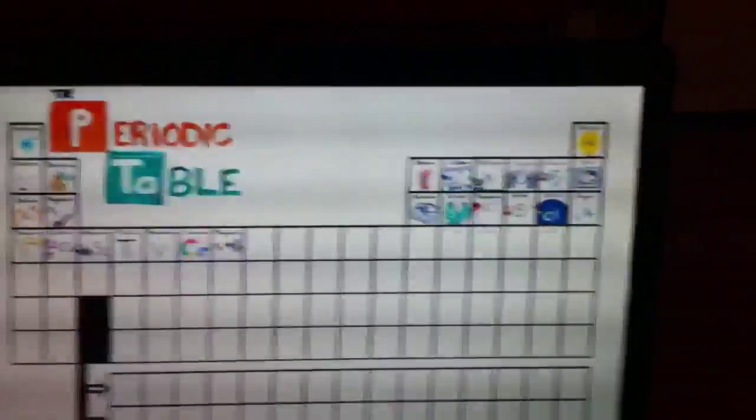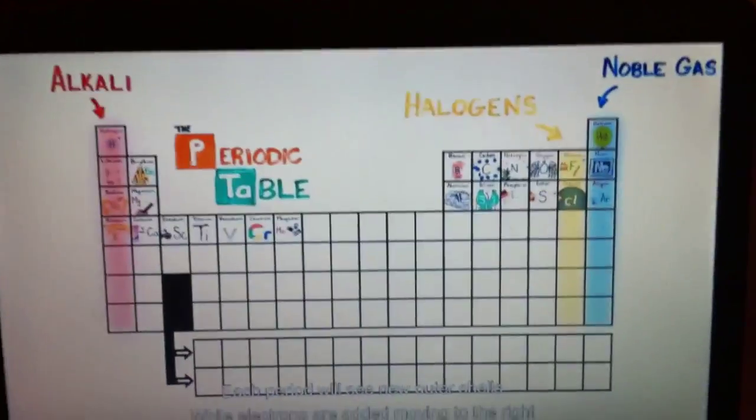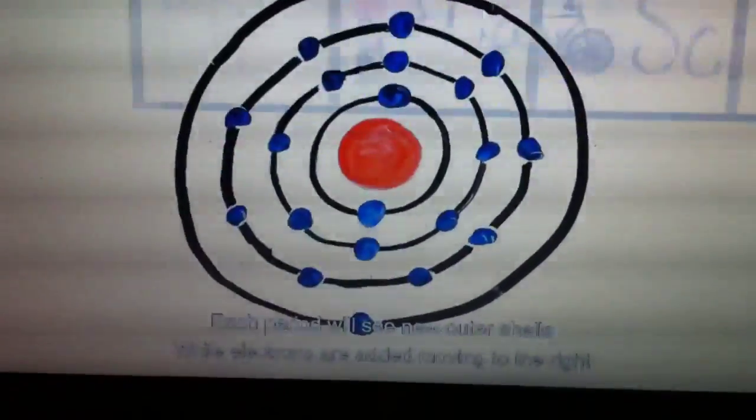This is the periodic table, noble gas is stable, halogens and alkali react aggressively. Each period will see new outer shells, the electrons are added, moving to the right.